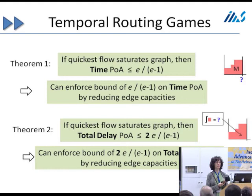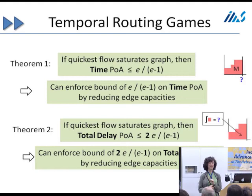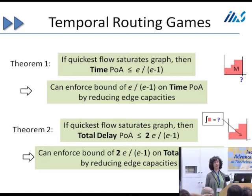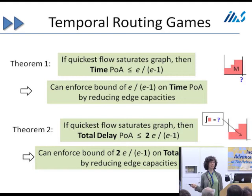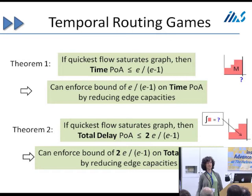If you reduce the capacity, is the price of anarchy worse if you don't? We weren't able to show a bound on the price of anarchy without doing this, so this is what we can show — it's one of the open questions. We don't have any examples where it's worse than e/(e−1). The Koch-Scitella example is the worst we know, and it happens to be a case of this form where the optimal saturates the graph. We'd like to prove that's the worst case but haven't been able to.